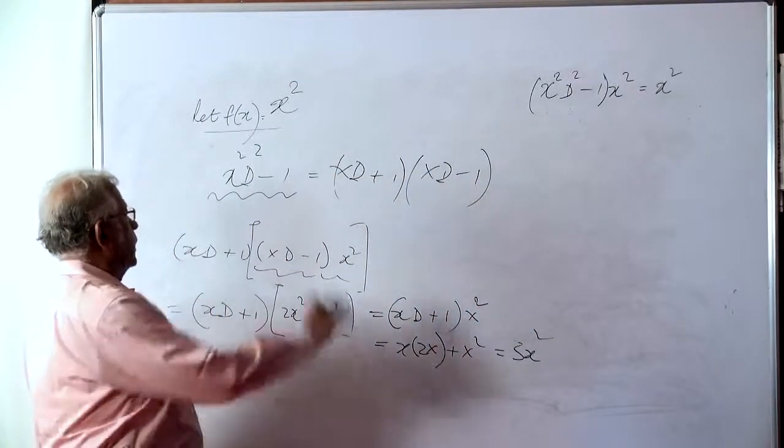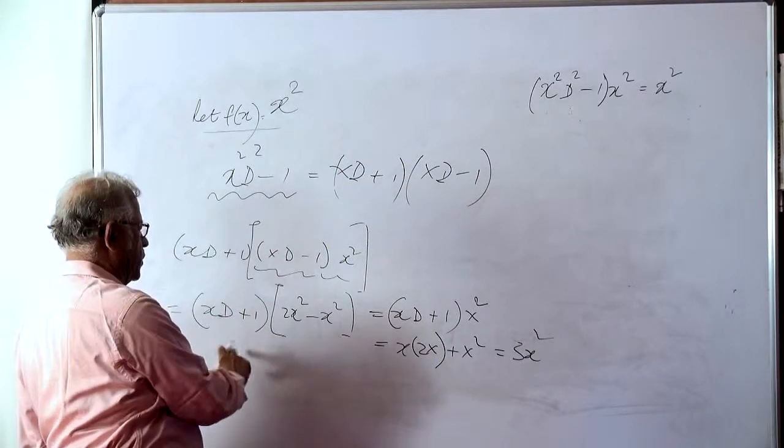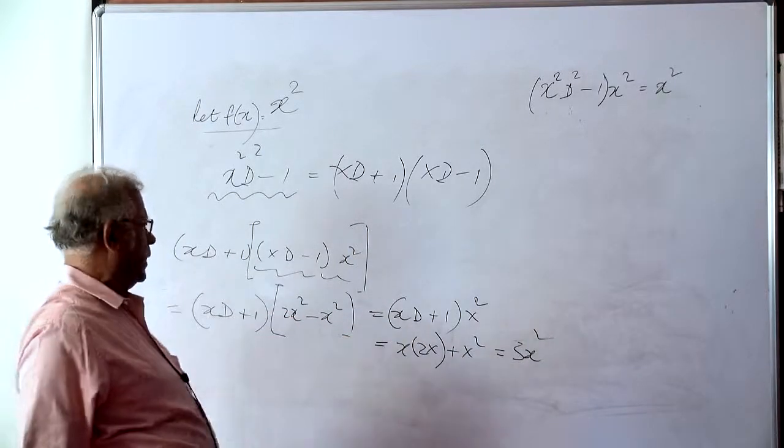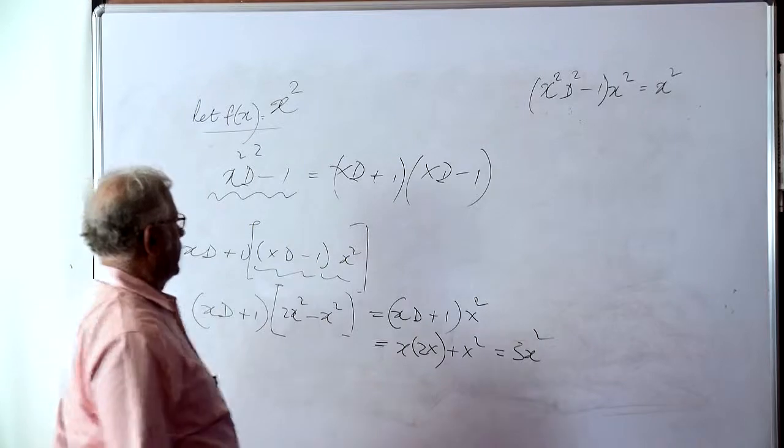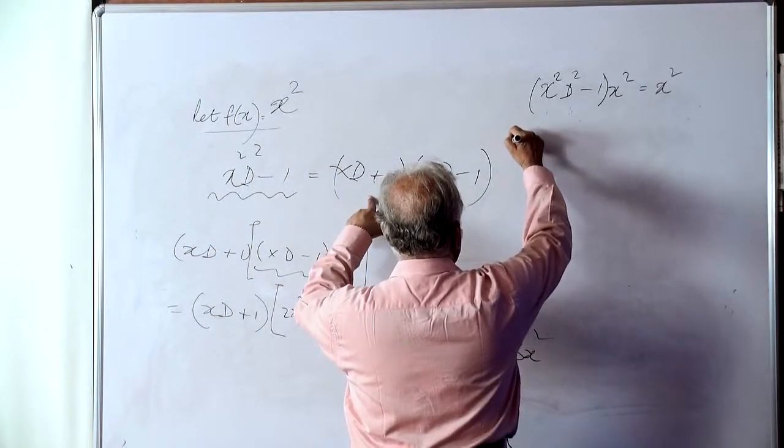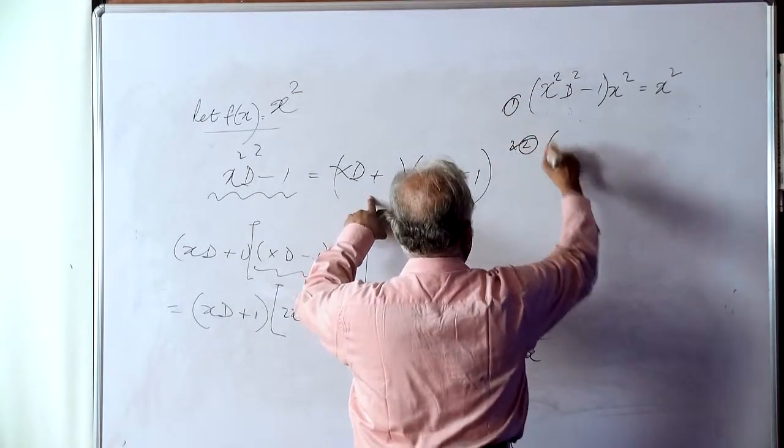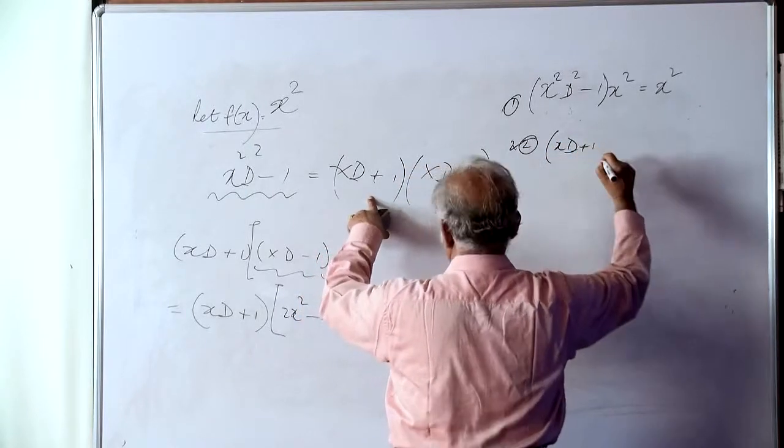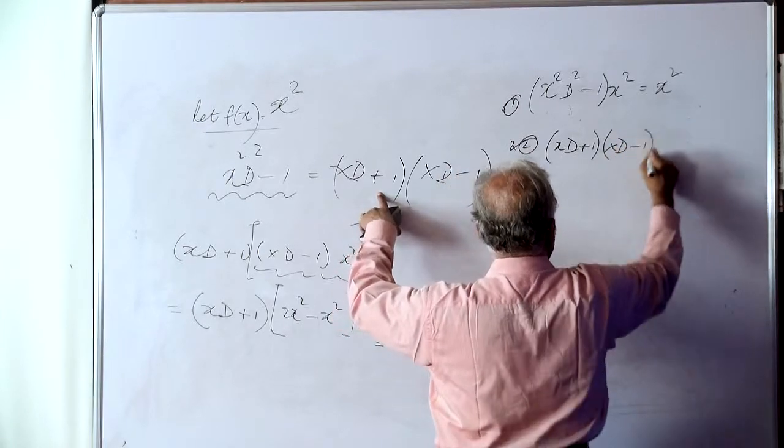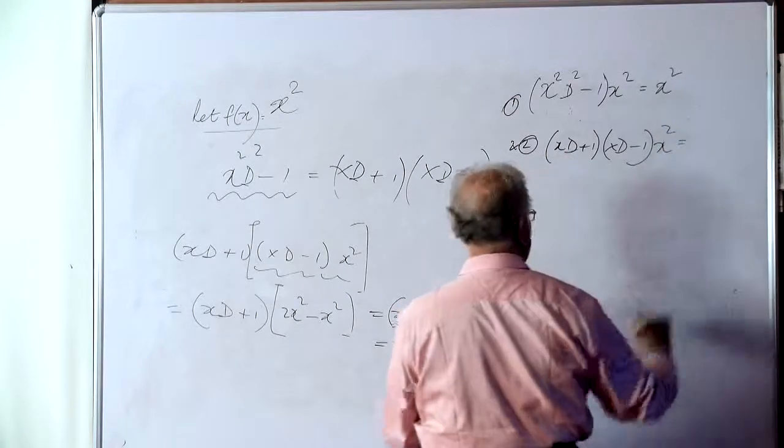So we have seen that the combined operation gave us x squared. Now, we find that if you split it into two factors, we will get 3x squared. And then we capture this result. In other words, if I do this in this order and this is result 1, result 2 is (xd plus 1) into (xd minus 1) on x squared is 3x squared.